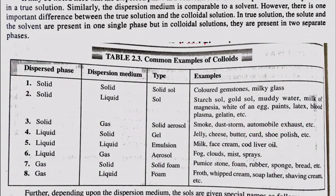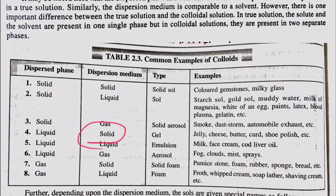Next is gel. A gel is the type in which the dispersed phase is liquid and the dispersal medium is solid. Examples include jelly, cheese, butter, curd, and shoe polish.